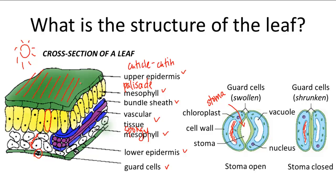The last type of cell that we haven't yet mentioned is the bundle sheath cell, which are tightly packed around the vascular tissue, as shown here in blue. We mentioned in the photosynthesis videos that in C4 plants, the Calvin cycle occurs in the bundle sheath cells. All leaves have bundle sheath cells, but in C4 plants in particular, they are enlarged.